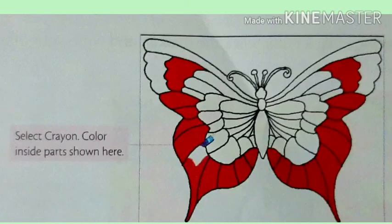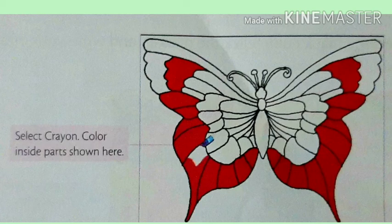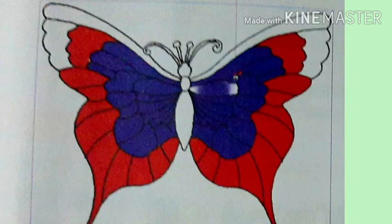Step 3: Keep the left mouse button pressed and drag it inside the part, as you can see in this picture. Step 4: After coloring the above shown part red, select blue color. Select the paint brush and color the part as you can see in this picture.